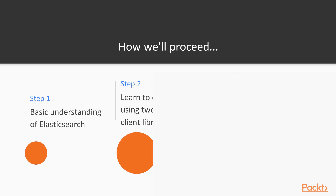In the next step, we'll take all that information and learn to do it in code. We'll use two different Elasticsearch client libraries in our PHP application and write code using each client library to integrate with our Elasticsearch server — writing queries, more advanced queries, programmatically building queries, and analyzing all the sample data we generated and inserted into Elasticsearch.